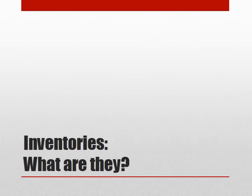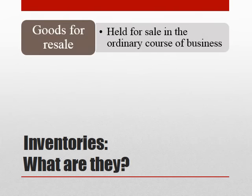So first things first, what are inventories? We have three broad categories. The first is goods for resale. This is where we have items held by a business and they're waiting to be sold to customers, so they are held for sale in the ordinary course of business.